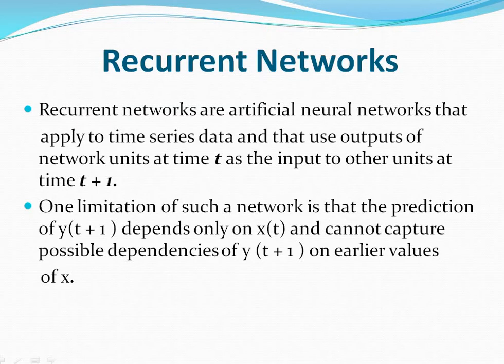The next advanced topic in artificial neural networks is recurrent networks. Instead of using multilayer networks, recurrent networks are proposed. In recurrent networks, as the name suggests, a closed loop — which we can call a feedback loop — is added. Recurrent networks are artificial networks that apply to time series data.